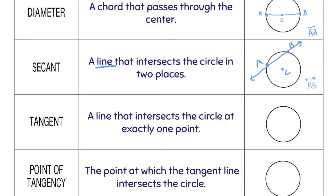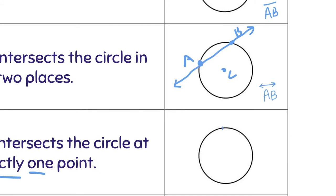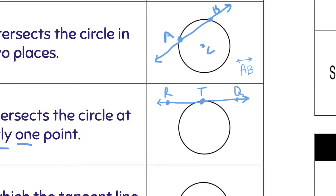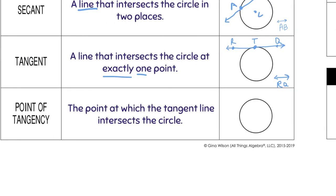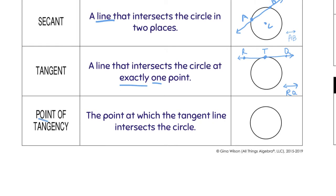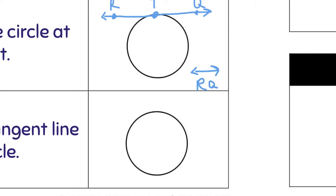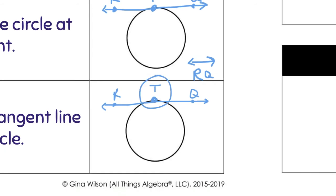Then the next thing that we have is a tangent. A line that intersects the circle at exactly one point. So let's call this T for tangent. So it's going to be a line that only goes to the circle that one time. Actually, let's use some other letters here. So let's use R and Q. So when we name that, we would call that line RQ. Now the point of tangency is the point at which the tangent line intersects the circle. So I'm going to draw the same picture from above. So if I had that, RQ, and then here's the point where it touches the circle, T. The point of tangency is only that point. So we would say point T.